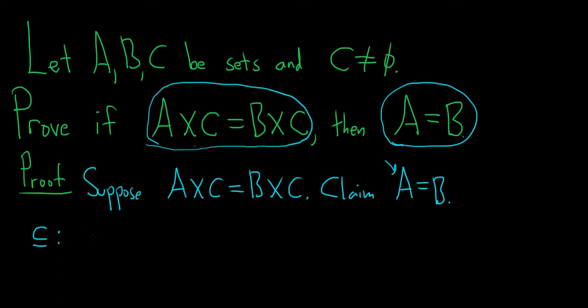We'll start by taking an element in capital A. Take any little a in capital A. Now we have to show it's in B. In order to do that, we have to use our hypothesis. We need an element in A cross C. This is where the non-emptiness of C comes into play.